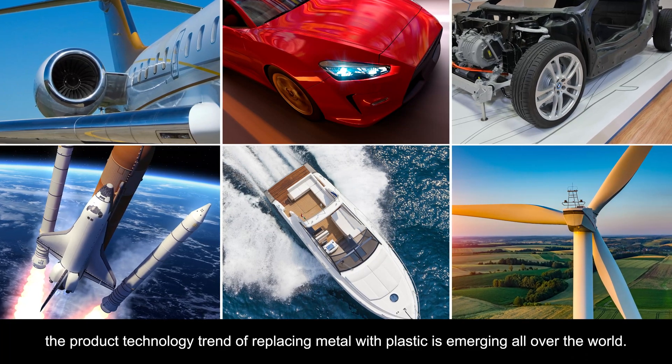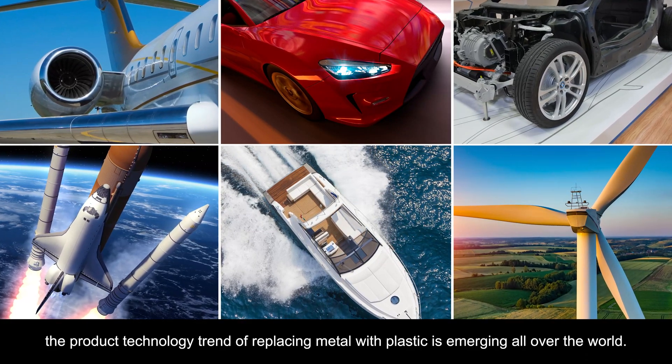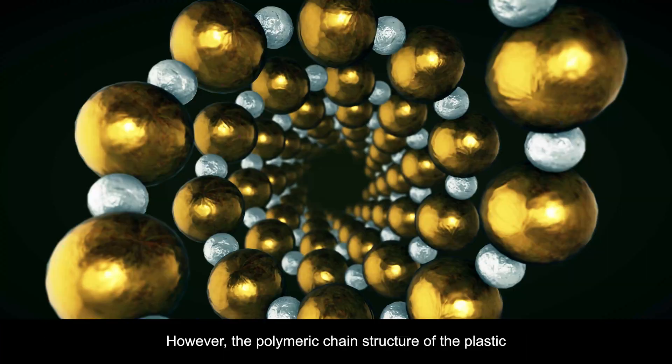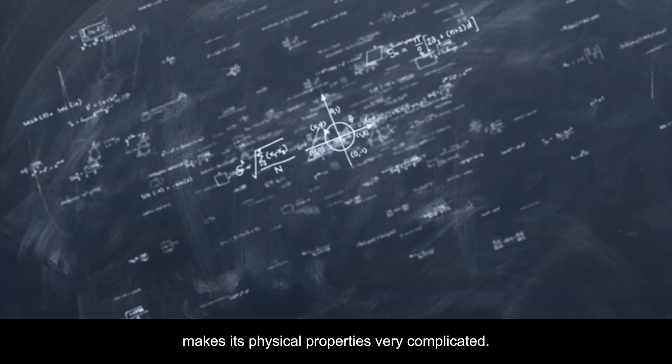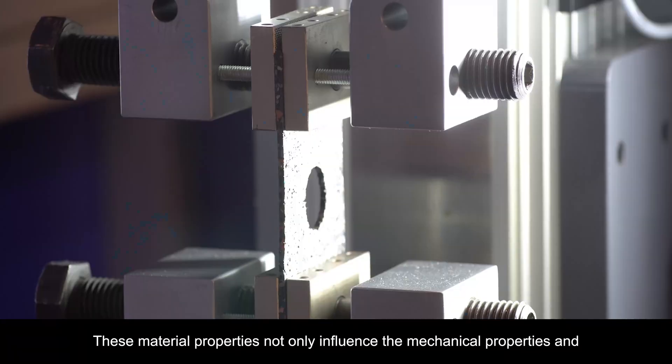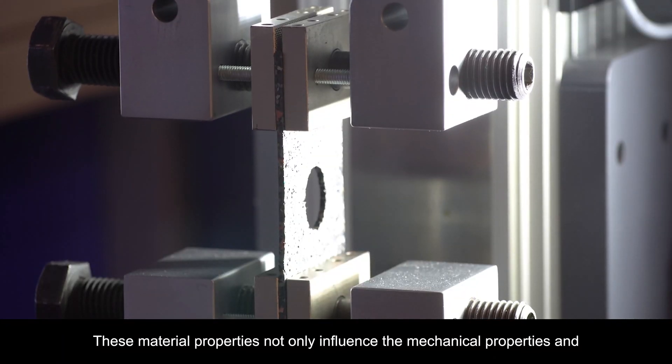The product technology trend of replacing metal with plastic is emerging worldwide. However, the polymeric chain structure of plastic makes its physical properties very complicated. These material properties not only influence the mechanical properties and strength